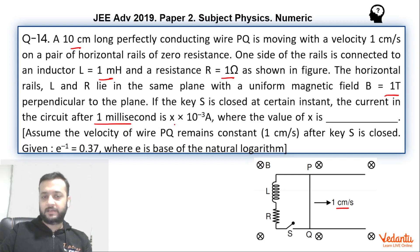We have to represent our answer in form of x times 10 to the power minus 3 amperes. So x will be our answer. Basically we have to find the current in terms of milliamperes and that itself will be our answer.